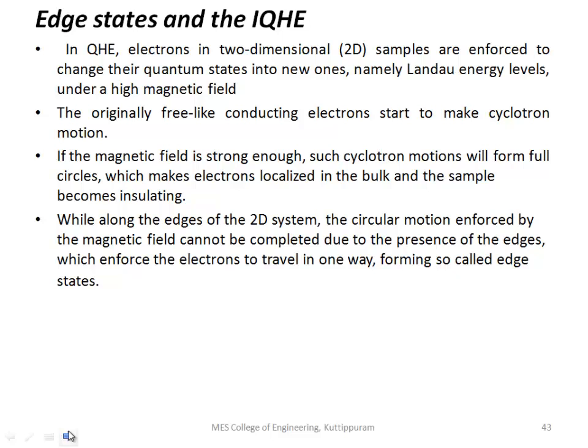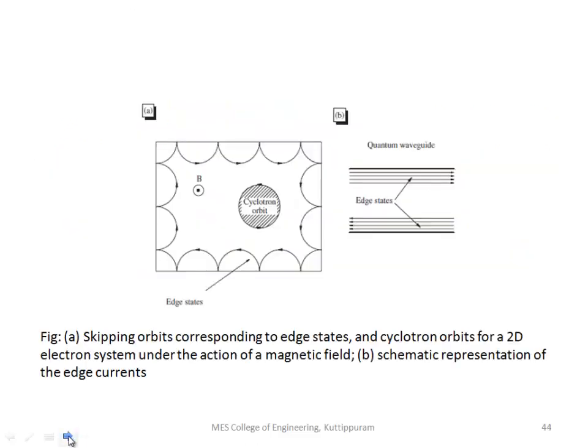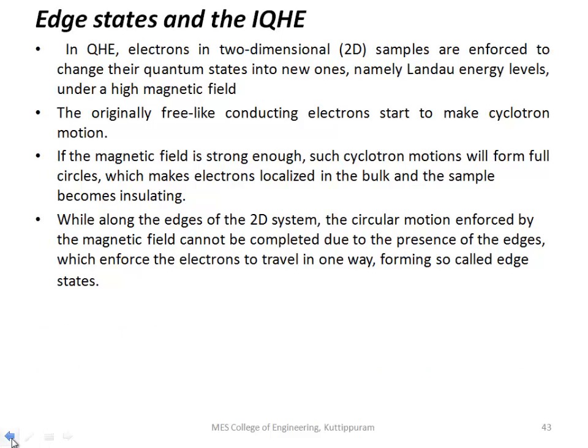So normally, freely moving electrons in a very high magnetic field will take an orbital motion, so cyclotron motion occurs. This is a circular shape and it will be within that bulk. Electrons move in circular shape within the bulk conductor. As a result, that sample becomes an insulator. But at the same time, at the sample edges, this circular motion is incomplete.